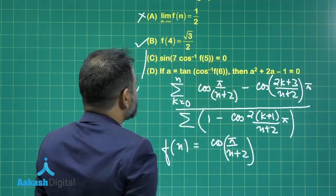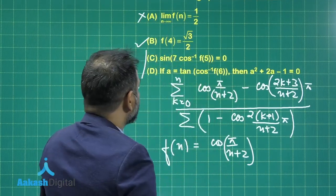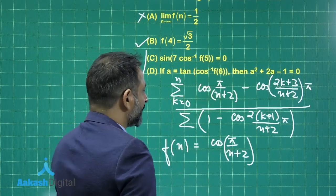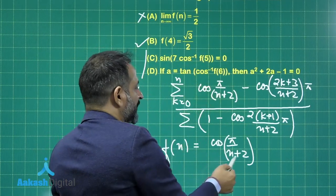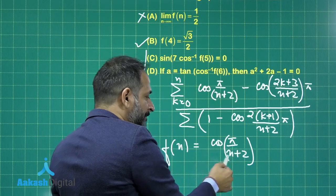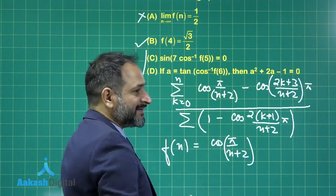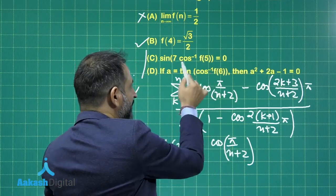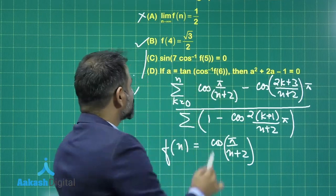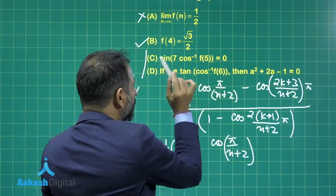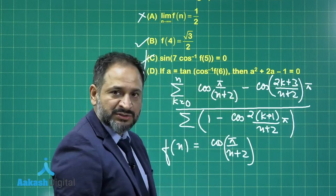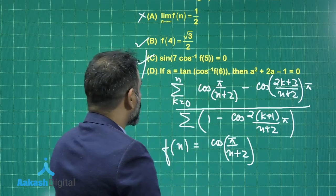Definitely the second option is correct. Again, cos inverse of f(5): if you put n equals 5, this will be π/7, so cos inverse of cos(π/7) is simply π/7. Then 7 will cancel out, giving sin of π, which equals 0. So this is also the correct option.